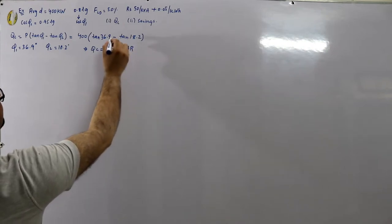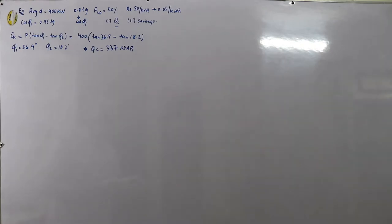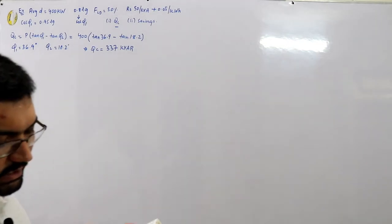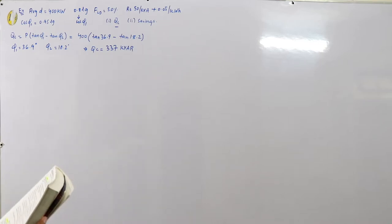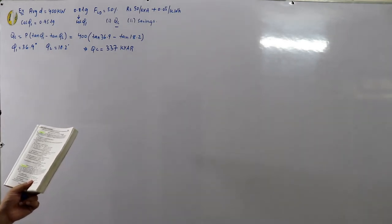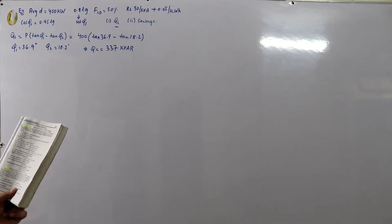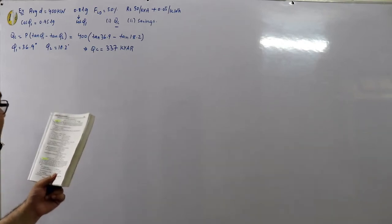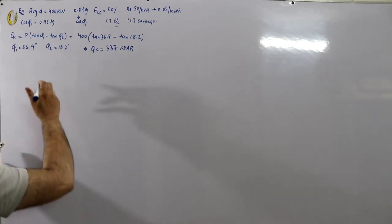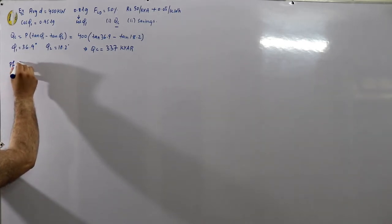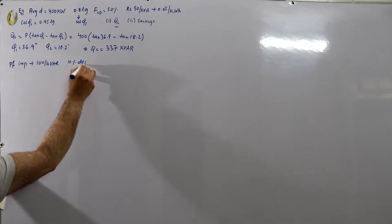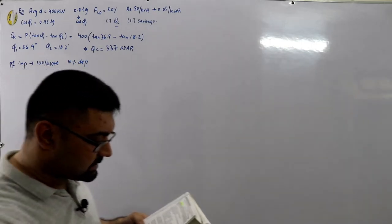Qc = 337 kVArs leading. Now for the savings, we look at before and after power factor correction. The 50 rupees per kVA is the maximum demand charge. The power factor improvement equipment costs rupees 100 per kVAr with 10 percent depreciation annually. We need to calculate the annual savings.